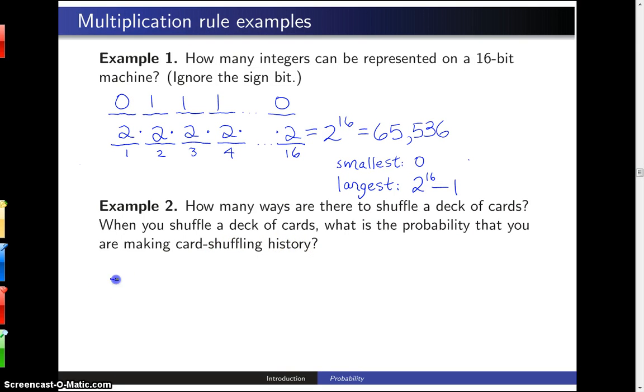As with the previous example, we're going to go ahead and put in some placeholders here. This first will be the top card after you shuffle the deck of cards. Then this will be the second one from the top, and the third one from the top, and this will be the bottom card right here.